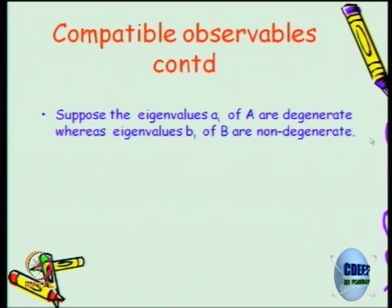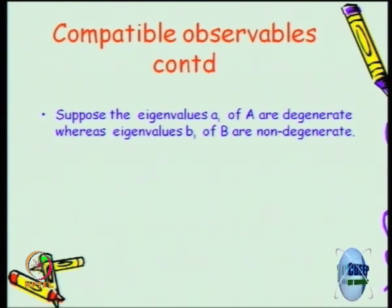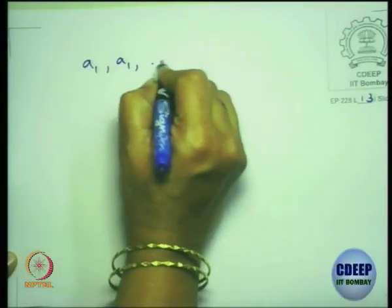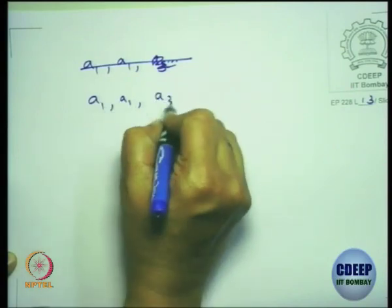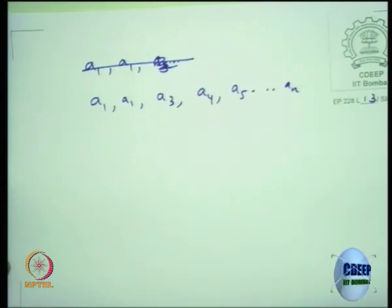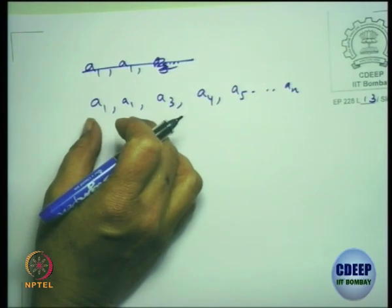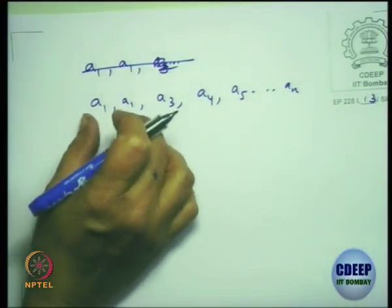What is the next complication? Suppose the eigenvalues A_i of A are degenerate — let us take A1 to repeat twice, with the remaining ones distinct. That is the degenerate situation. Whereas the eigenvalues B_i of B are non-degenerate, B1 to Bn all different. So A operator on state |1⟩ gives A1 times |1⟩, and A operator on state |2⟩ also gives A1 times |2⟩ because of the degeneracy — A2 is the same as A1.